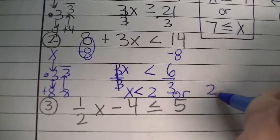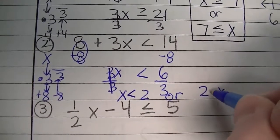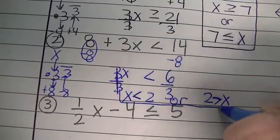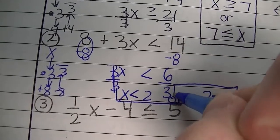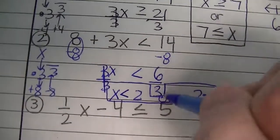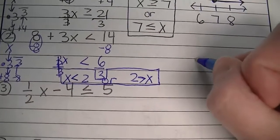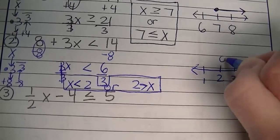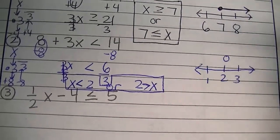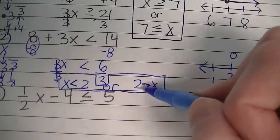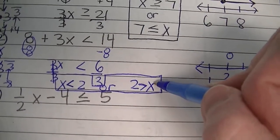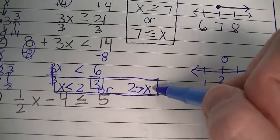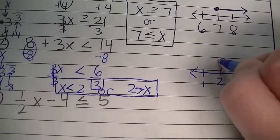You can write the 2 first and the variable second — notice that 2 is larger, so over here 2 is still larger. Now for the number line: make sure you put that 2 on there. It's going to be an open circle because 2 is not a possible answer. Numbers smaller than 2 that x could be, like 1, negative 2, or negative 99, all lie to the left on the number line.